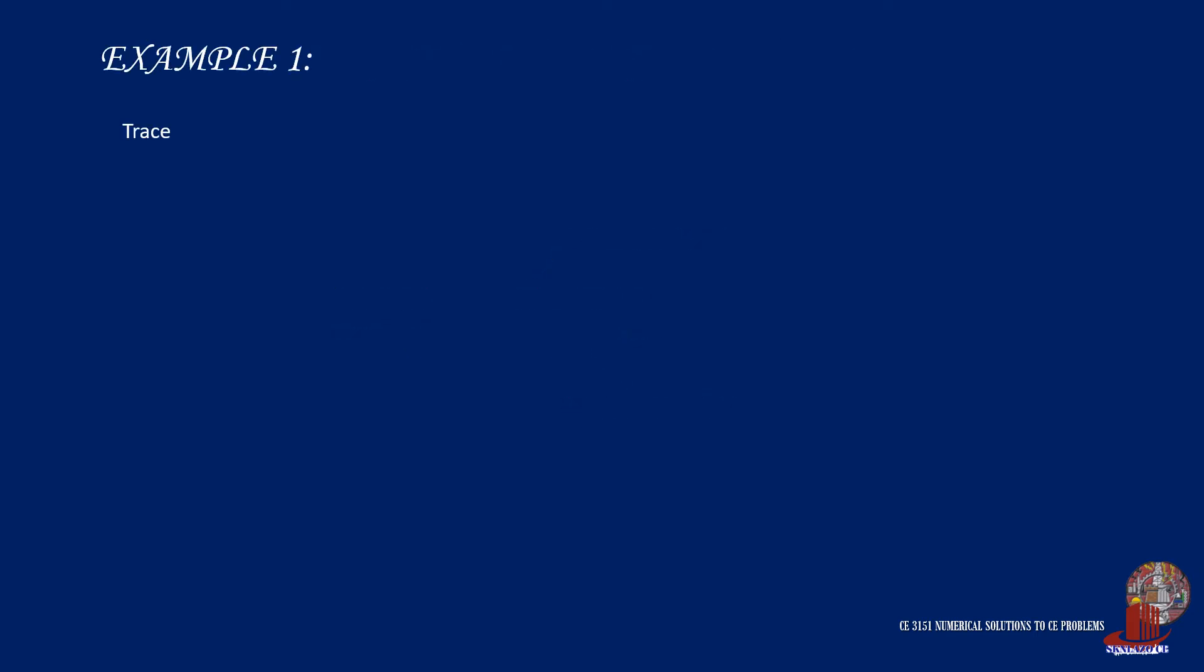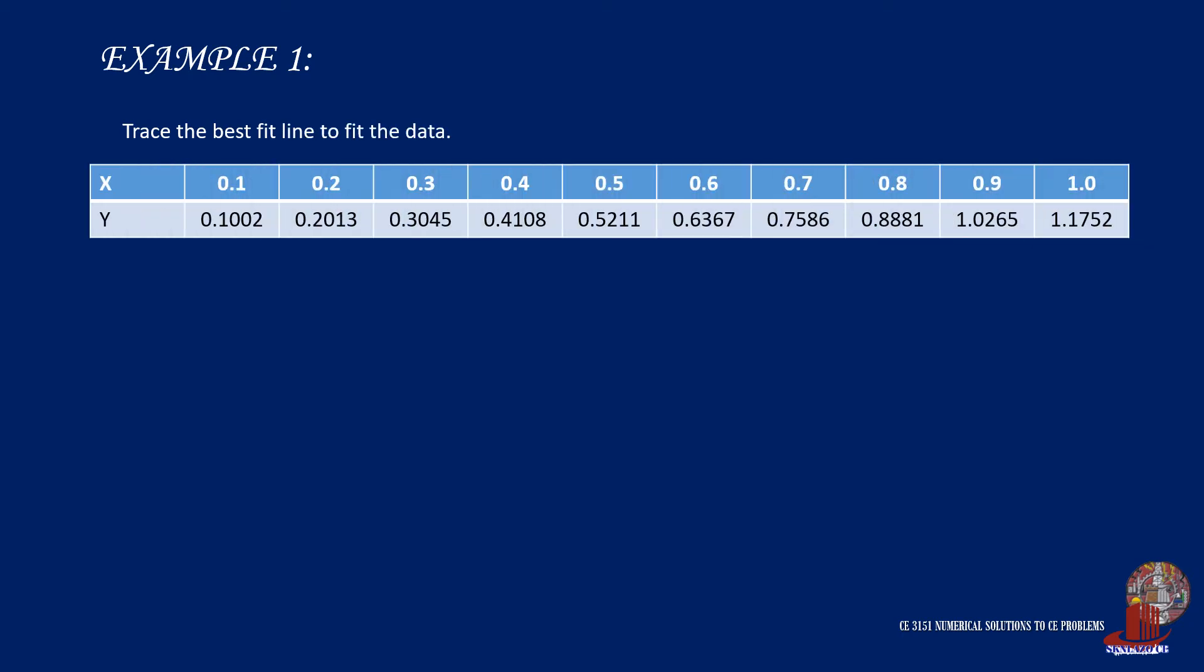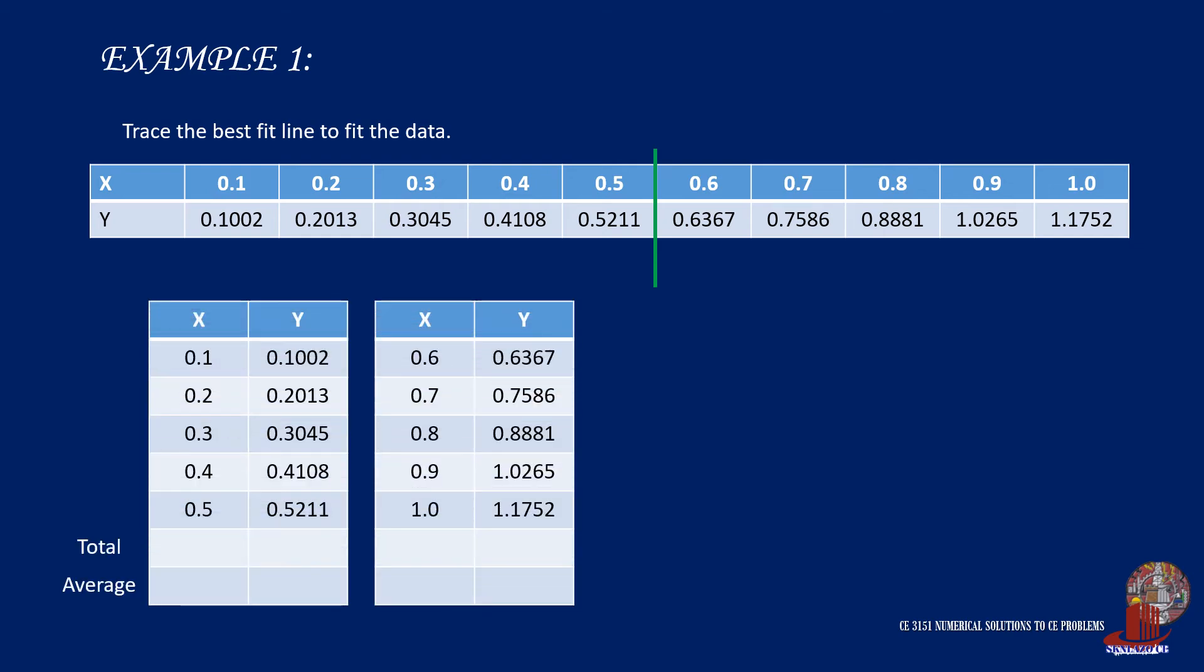Check this example. We are required to trace the best fit line for the following data. Note that there are 10 points from the table so we can equally divide them into two groups of five elements. Place the values of x and y into two groups and compute for their total as well as their average. x1 turns out to have a total of 1.5, which then is divided by five elements giving the value of 0.3. Summation of y1 is computed as 1.5379 and its average is taken as 0.30758. The total of x2 is 4 and dividing it into 5 would be equal to 0.8. Summation of y2 is 4.4851 where the average is further computed as 0.89702. The average can then draw the two equations.